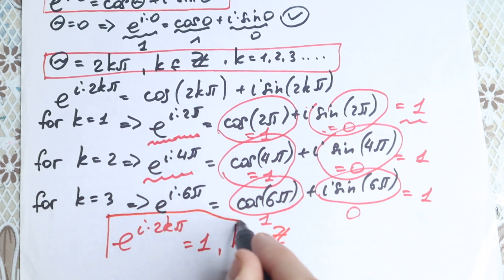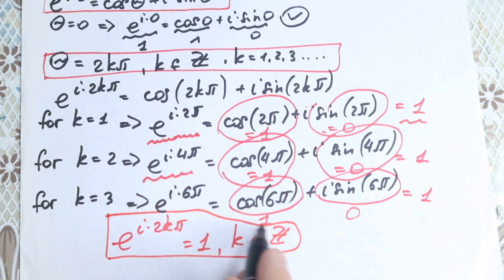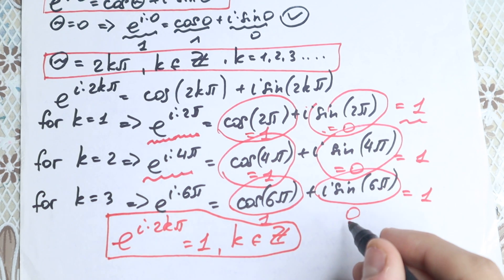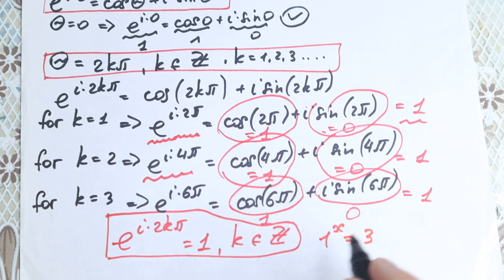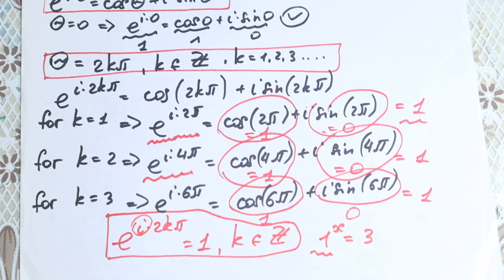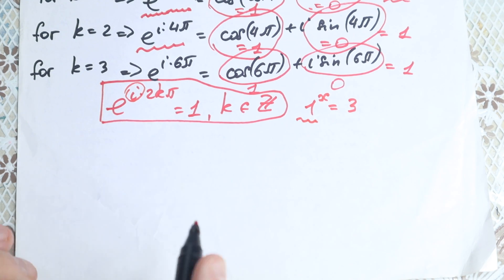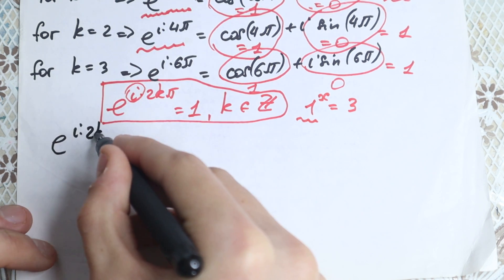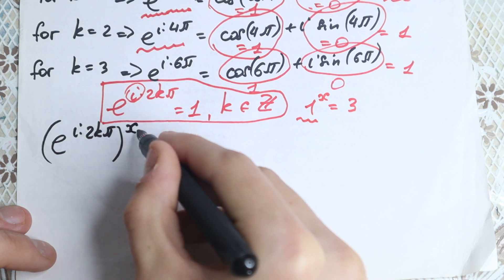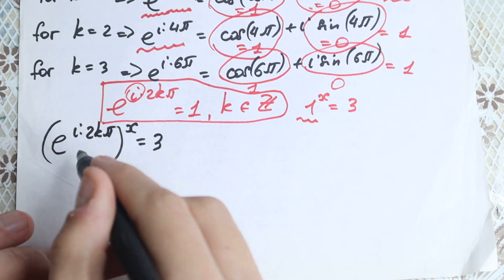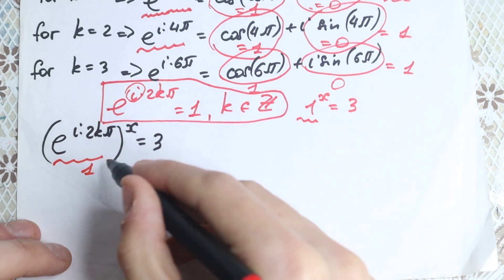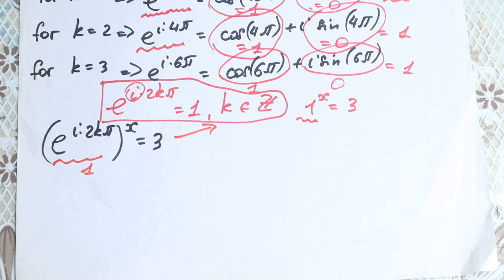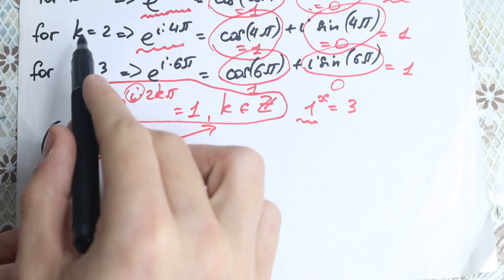Now let's go back to the original equation. We had 1 to the x equals 3. Let's substitute this complex expression in place of 1, since we proved e to the power i times 2k pi equals 1. So we get e to the power (i times 2k pi), all raised to the power x, equals 3. This works only when k is an integer.